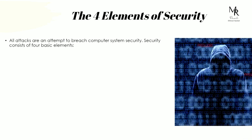All attacks are an attempt to breach a computer system's security, and security consists of these four basic elements. A hacker's goal is always to exploit any type of vulnerabilities in a system or network — to find a specific weakness in one of these four elements of security. That's why it's important to understand what these four are and the different types of attacks that generally fall within them.